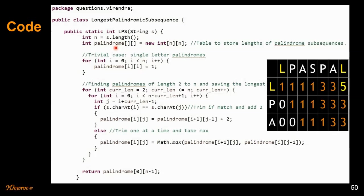Let's look at the code. We have initializations and the palindrome matrix where we store the lengths of the palindromic subsequences. The first case handles single letter palindromes — we update all lengths to 1 along the diagonal. Then we go from length 2 to length N. For each length we get all substrings of that length and apply the two rules. If first and last characters match, we add 2 to the LPS of the remaining trimmed string. If not, we trim one at a time — from the end, from the start — and take the max. Please go through the code; I have given the code link here.